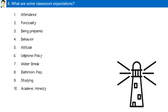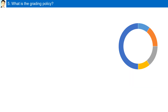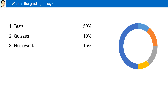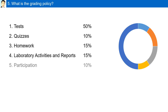Academic honesty: cheating and plagiarism are not tolerated. You will receive a grade of zero and be reported to the administration. Please refer to the school's grading policy for academic honesty. The grading breakdown is: tests 50%, homework 15%, laboratory activities and reports 15%, quizzes 10%, and participation 10%.